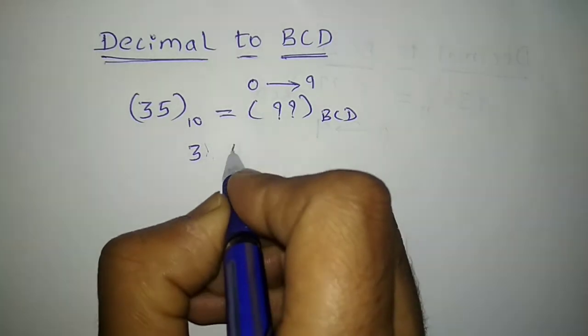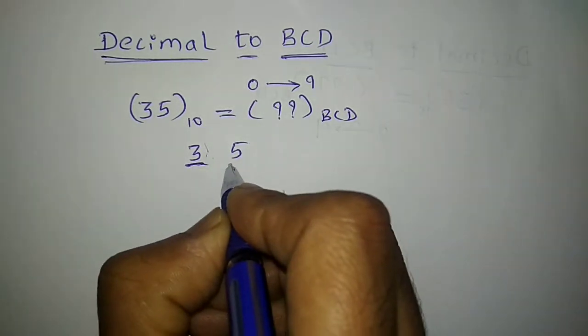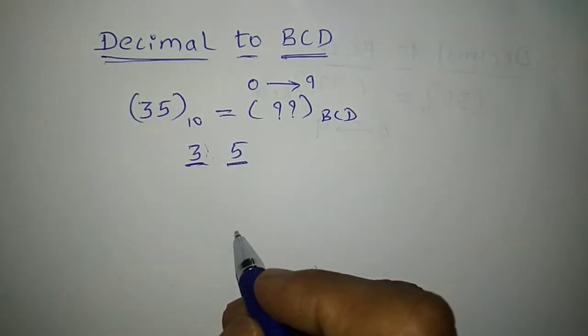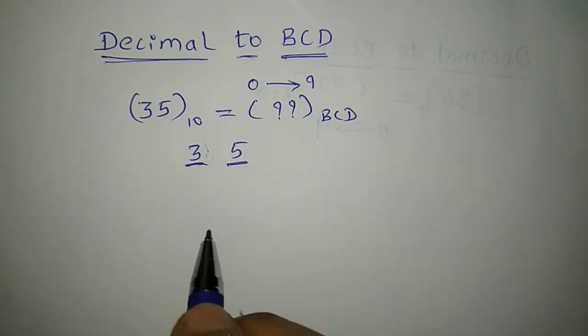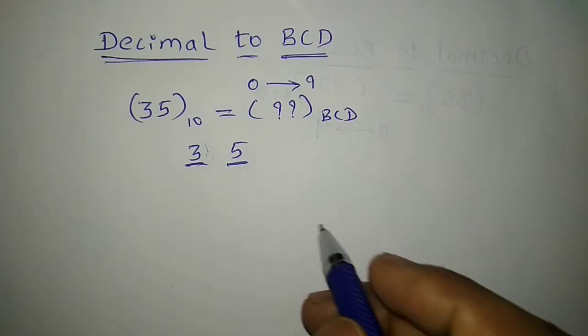So let me consider 35, that is 3 and 5. So what is the equivalent of 3 in binary and what is the equivalent of 5 in binary? I need to write using 4 digits and later combine the answer.